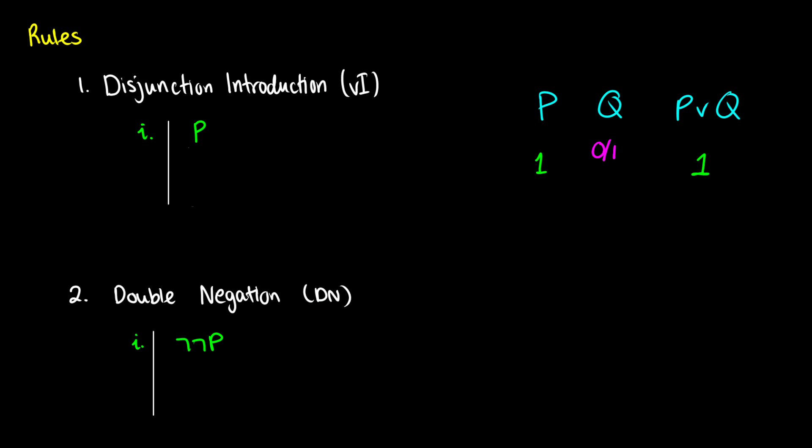It doesn't matter what the value of q is. It could be 0 or 1 — the disjunction will still be true. So with disjunction introduction, if we have p, in a subsequent line we can write p or q, or introduce any well-formed formula after the 'or', because p is true. For example: 'I like eating Captain Crunch' is true, therefore 'I like eating Captain Crunch or I like eating radiation flakes for breakfast' is also true. That is disjunction introduction — we just add something to p, and p or q will be true.